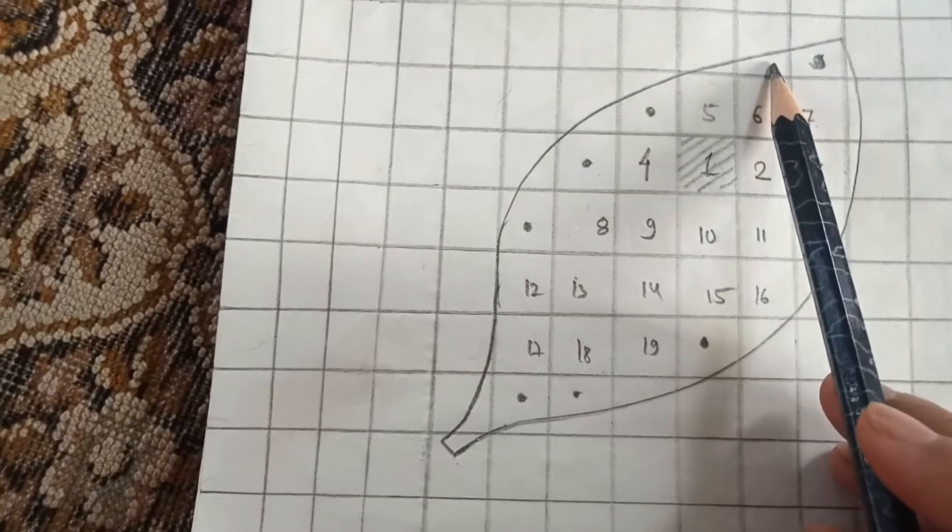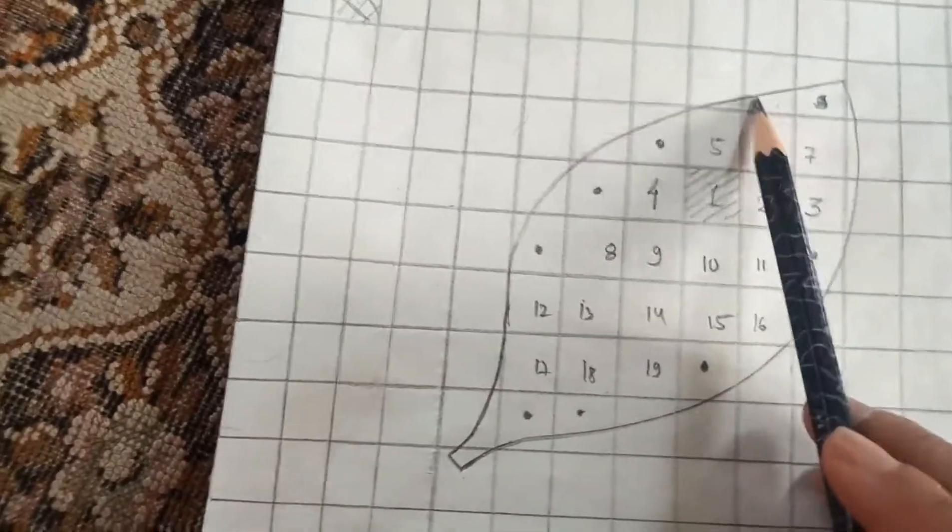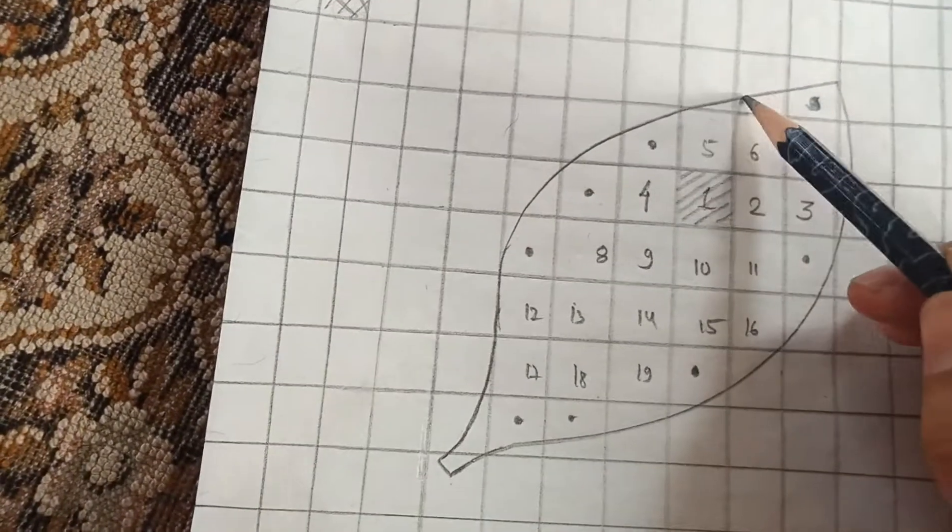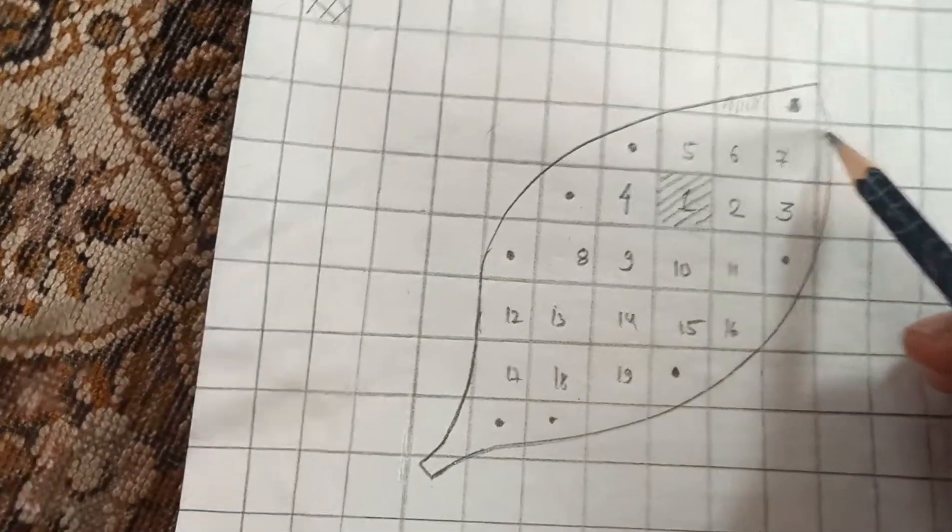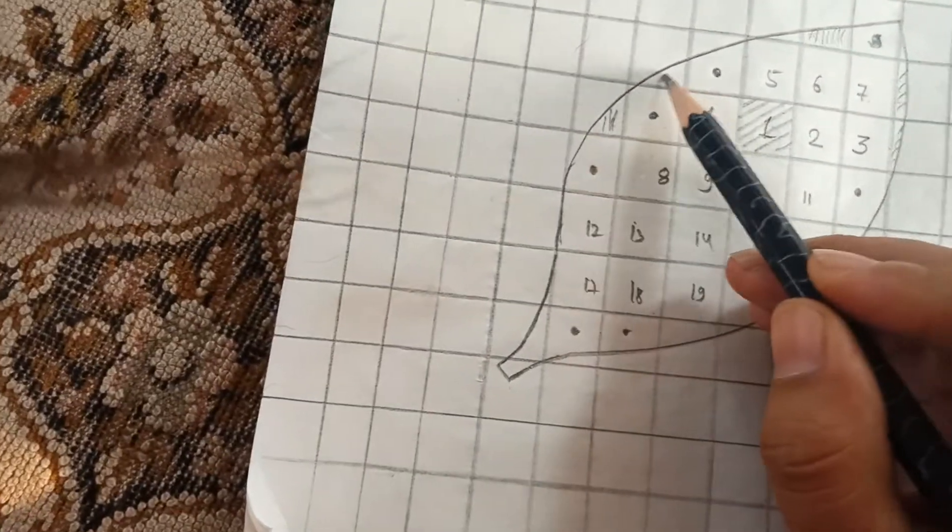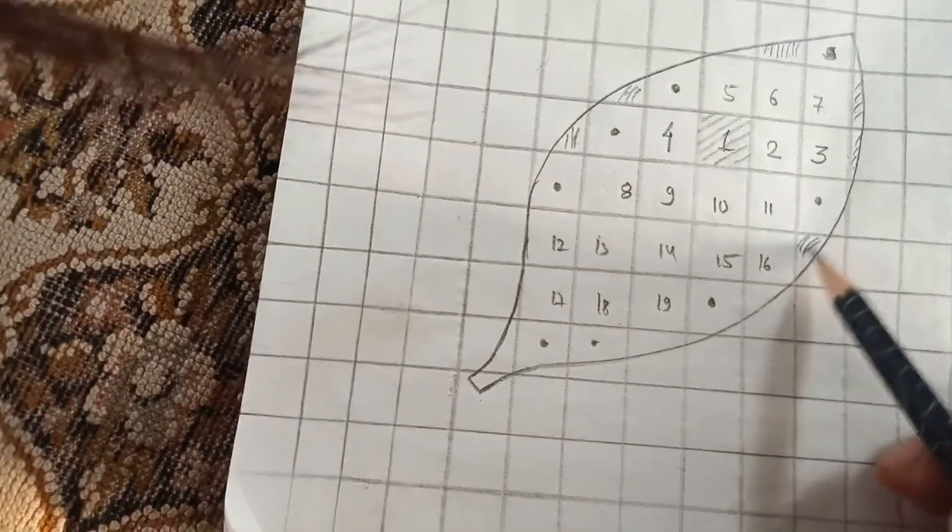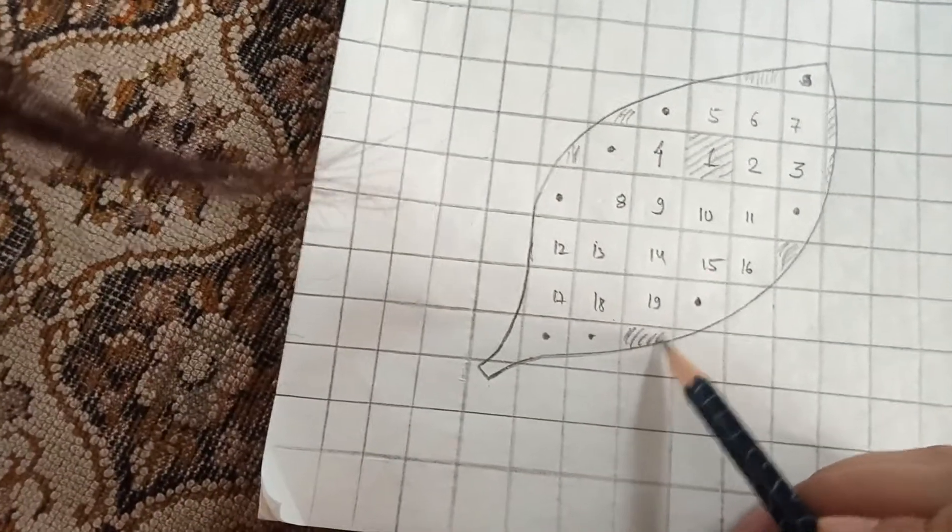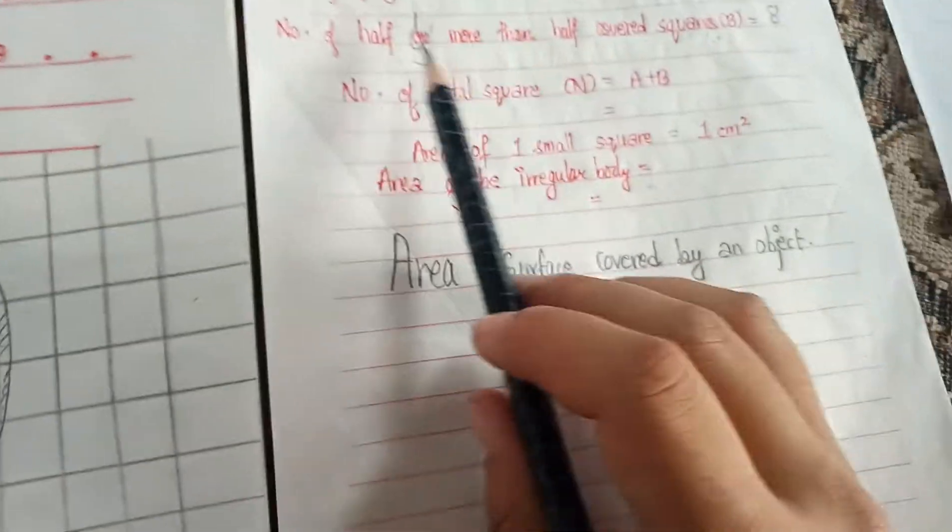We must also see some squares that are covered but are less than half. These are less than half, so we will neglect them. We will not take them into account, we will not consider them.